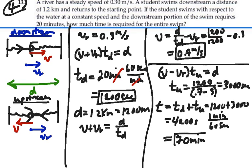So it will take 20 minutes to go downstream, 50 minutes to come back against the current upstream. Total time of 70 minutes to complete the entire swim, moving with a swimming velocity of 0.7 meters per second.